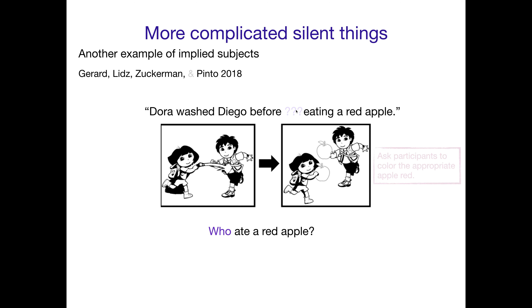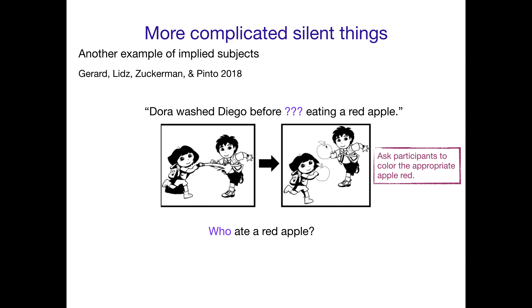The way that they got participants' knowledge was to ask participants to color the appropriate apple red. So if they color Dora's apple red, they think she's the implied subject. If they color Diego's apple red, they think he's the implied subject.